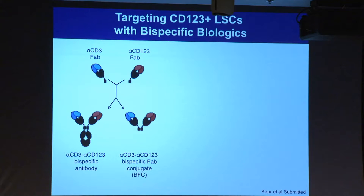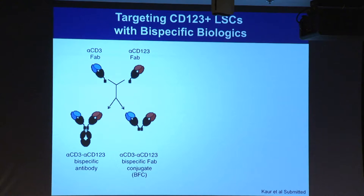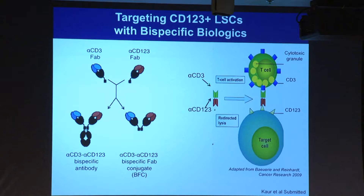In collaboration with Janssen Pharmaceutical, we evaluated two versions of a bispecific antibody: one side binds to CD3, the other side binds to CD123, the leukemia stem cell marker. We compared a bispecific conjugate without an Fc portion versus a full-length bispecific antibody. The idea is that by binding CD3 to T cells and CD123 to leukemia stem cells, you can recruit T cells into proximity with the leukemia stem cells so the T cells can kill the tumor cells.